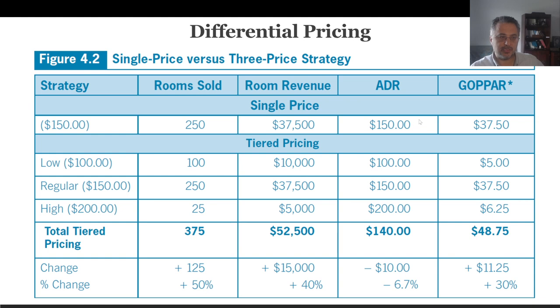We get some creative marketing, some special offers, we were able to get 25 people paying high price, $200. And we offer some discounts, we were able to get 100 more people. I want you to look at ADR. In the first single price scenario, ADR is 150. But in this three-tier pricing model, 140. So our ADR has dropped a little bit. This is $10, which is about negative 6.7%. It has dropped 6.7%. But if you look at the GOPPAR, gross operating per available room, it was $37.50. Now it has become $48.75, almost 30% increase.